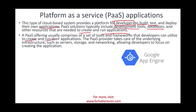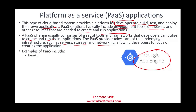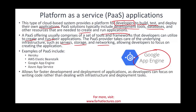Examples of PaaS include Heroku, AWS, Google App Engine, and Azure from Microsoft. It allows for faster development and deployment as developers can focus only on writing the code, because they have the sandbox environment provided by the PaaS. In other words, they are given the tools and the field to work in rather than dealing with infrastructure and deployment tasks.